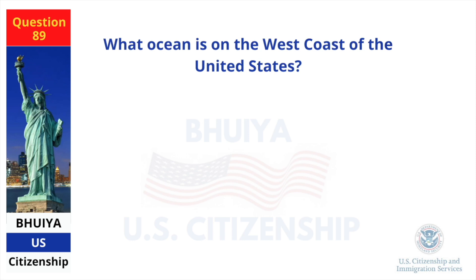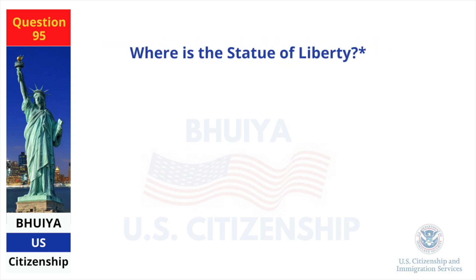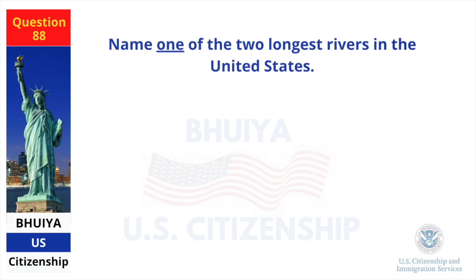What ocean is on the west coast of the United States? Pacific Ocean. Where is the Statue of Liberty? New York Harbor. Name one of the two longest rivers in the United States. Missouri River.